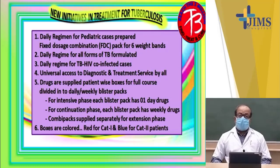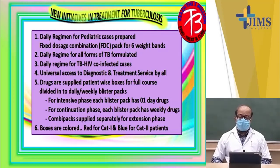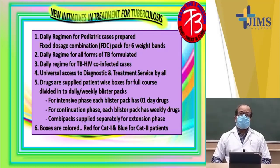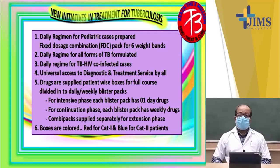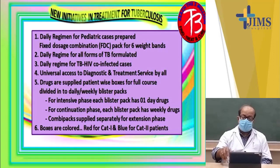Category 1 patients are the new patients — never been treated for tuberculosis. This can be pulmonary or extra-pulmonary tuberculosis but freshly diagnosed. Category 2 patients are the old patients — sometimes previously treated, with some failure in treatment, non-compliance, or relapse. Category 1 box is colored red, category 2 is colored differently.